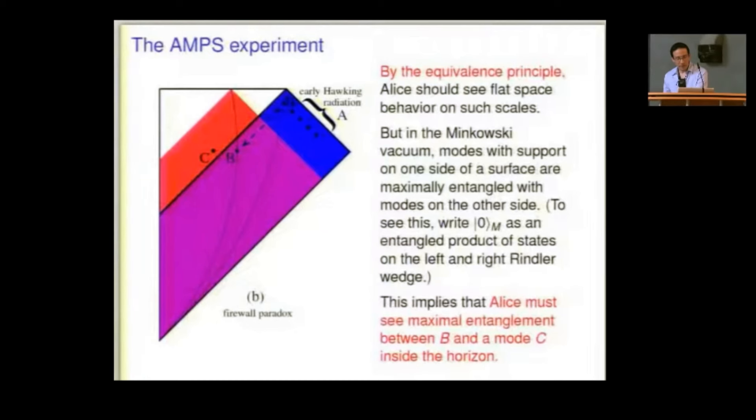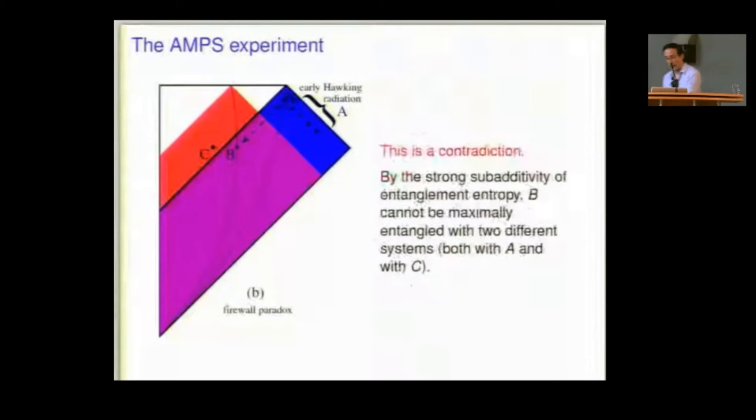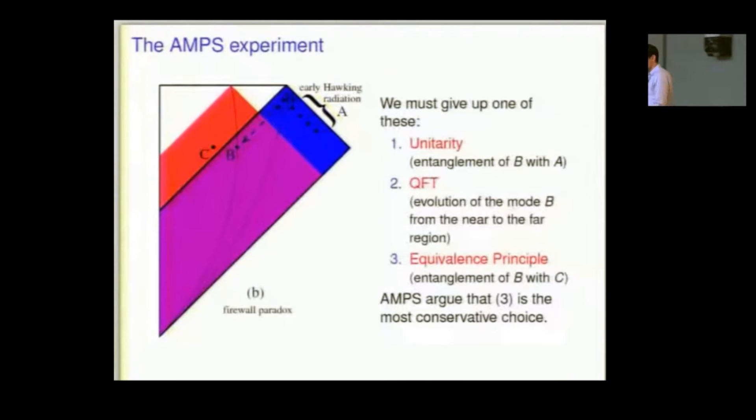So she has to see B maximally entangled with C. And recall, please, that we had already decided that B has to be maximally entangled with A, according to Bob, by unitarity. And that's a contradiction. One can show, and quantum information people have shown us, that a system cannot be maximally entangled with two distinct other systems, both with A and with C.